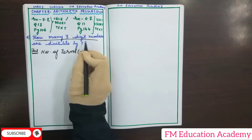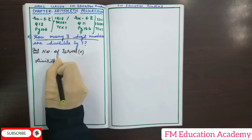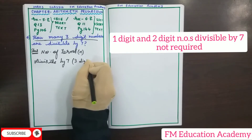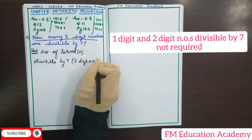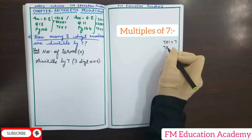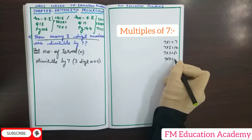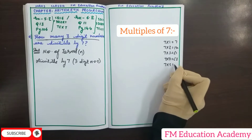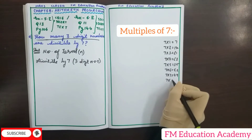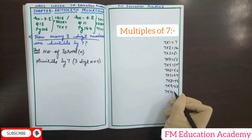Now I have to find out the numbers which are divisible by 7. I need only three-digit numbers — not single-digit and not two-digit numbers. If I look at the multiples of 7: 7, 14, 21, 28, 35, 42, 49, 56, 63, 70. These are my multiples of 7.